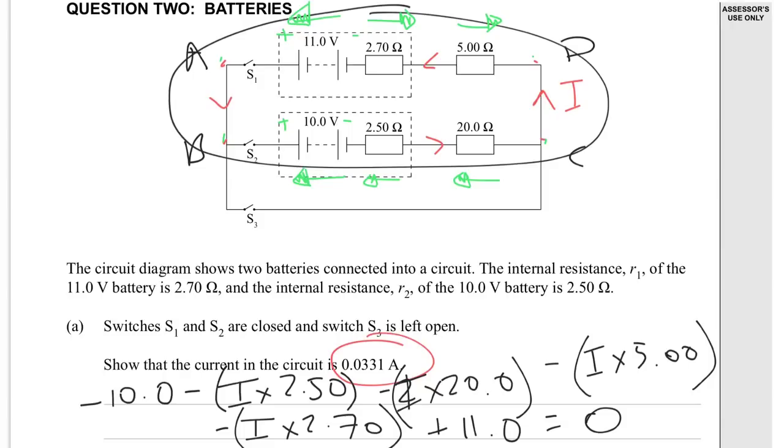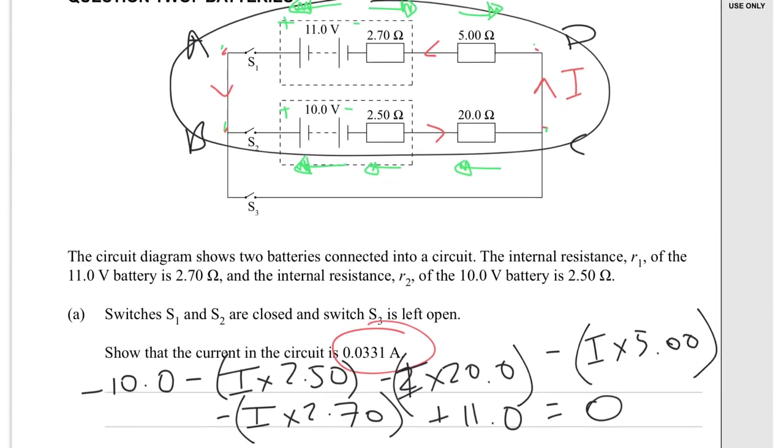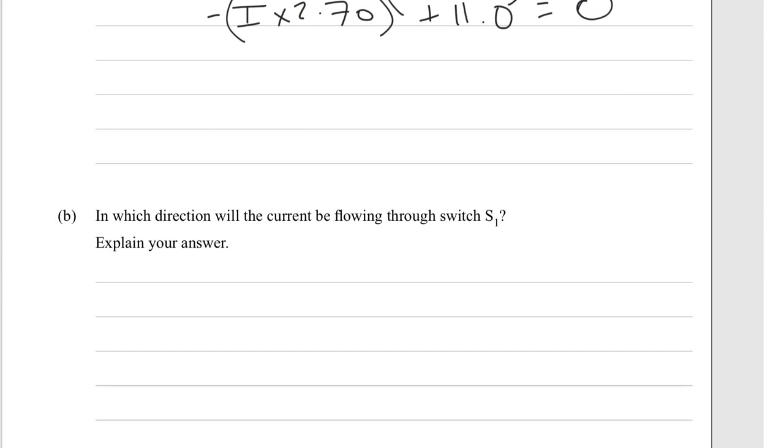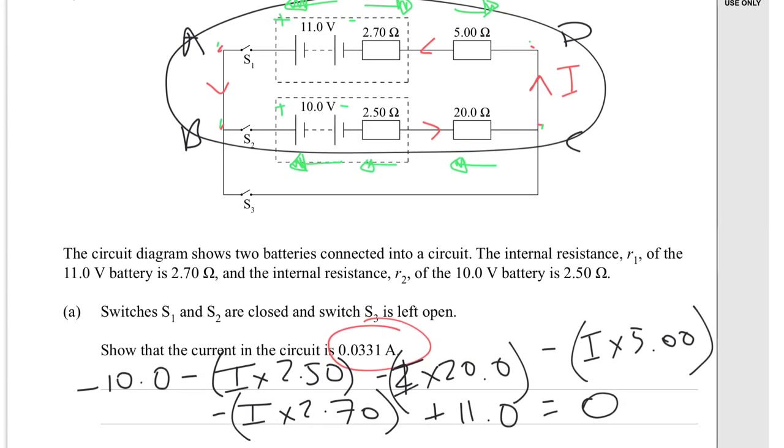So you would take that, you would add up all of these I times somethings and rearrange for I to calculate it. Because both of the batteries are pushing against each other, you would suspect there'll be quite a low current, and I think that's what you get, but I'm not going to linger on that. Replay it if you need a recap. In which direction will the current be flying through switch S1? Now this depends on if I got my current direction correct.